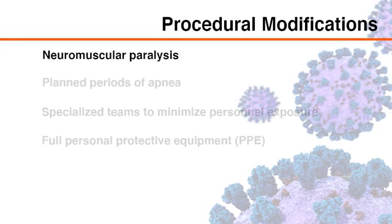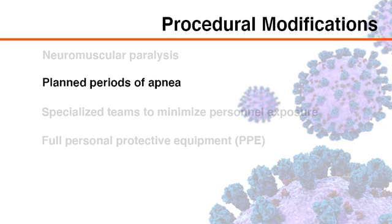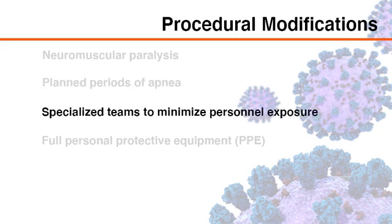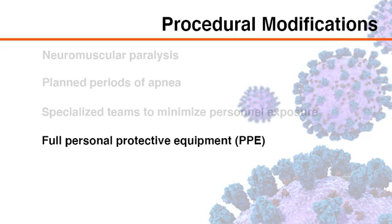Percutaneous tracheostomy procedures for patients with COVID-19 include the use of neuromuscular paralysis to minimize the cough reflex, as well as periods of apnea when the ventilatory circuit is considered to be open. The procedure requires highly specialized teams that minimize the number of personnel, as well as full personal protective equipment or PPE.